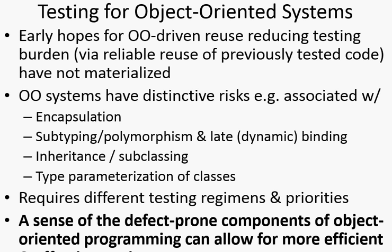— driven by object-oriented techniques, by inheritance for example, and associated with that polymorphism — would greatly lessen the defects out there. The idea is we'd reuse our code base. Rather than writing it anew, we'd be able to reuse these components, and therefore they'd be tried and true.